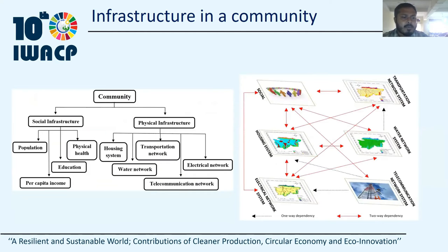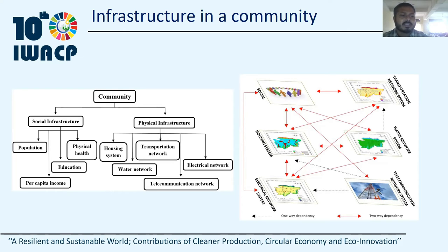There are several types of infrastructure. Basically, a community deals with two types: social infrastructure and physical infrastructure. Social infrastructure consists of housing, transportation, electrical, telecommunication, and water. As housing is the basic need for a living being, in this work we have considered the housing infrastructure. Dependency among the infrastructure also plays a very important role for the functionality of any community.